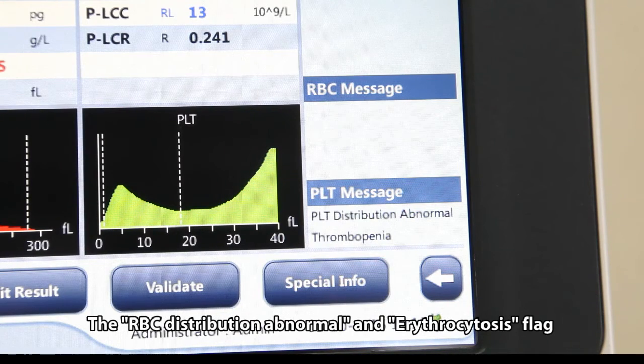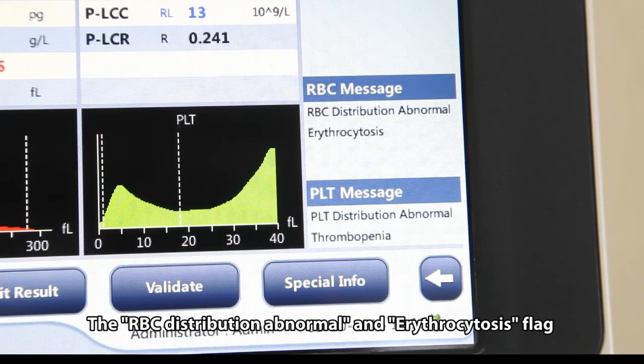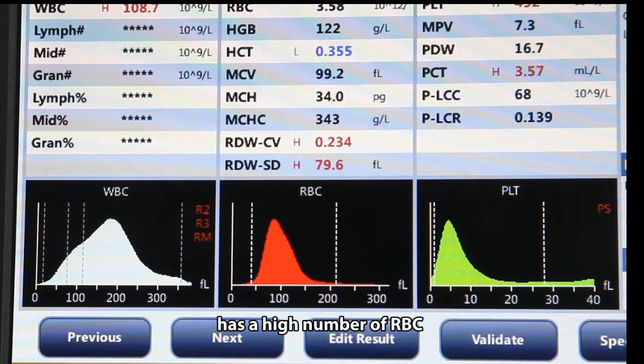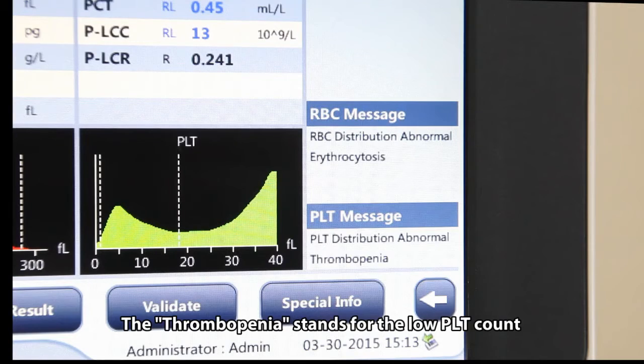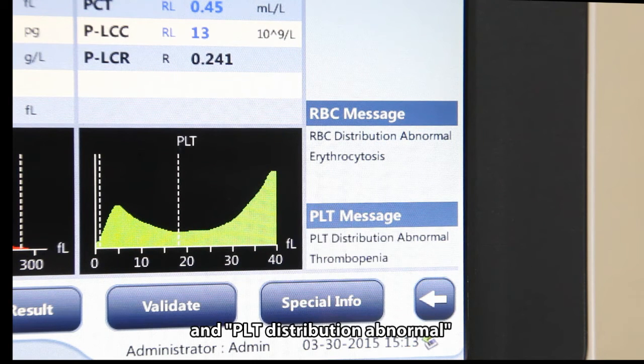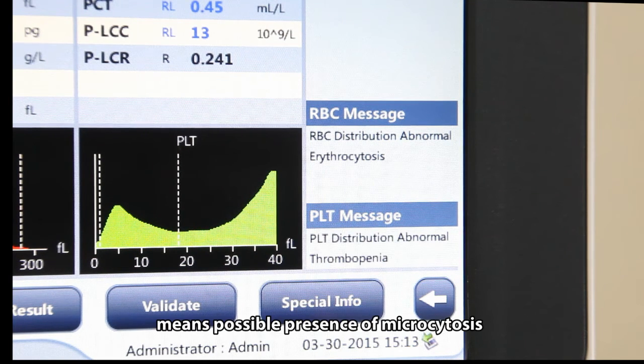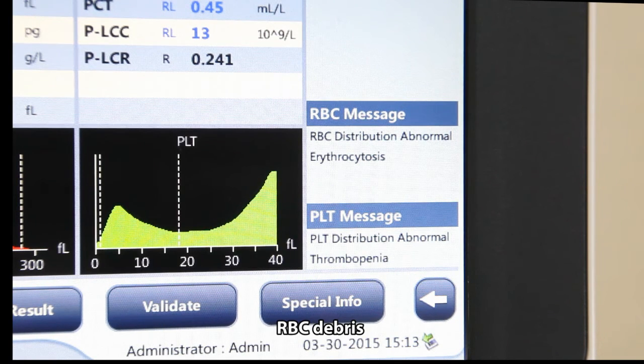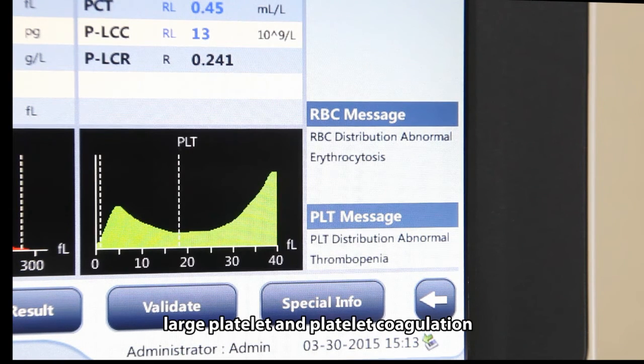The RBC distribution abnormal and urethrocytosis flag represent either signs of abnormal RBC present or sample has a high number of RBC. The thrombopenia stands for low PLT count and PLT distribution abnormal means possible presence of microcytosis, RBC debris, large platelet, and platelet coagulation.